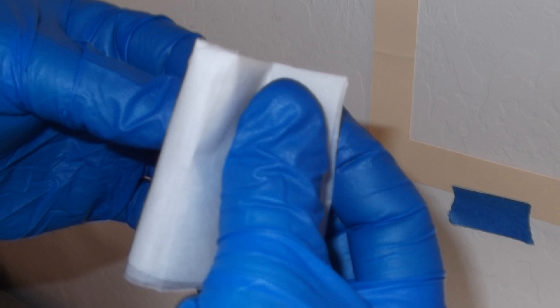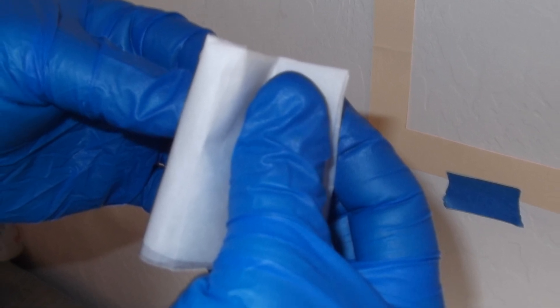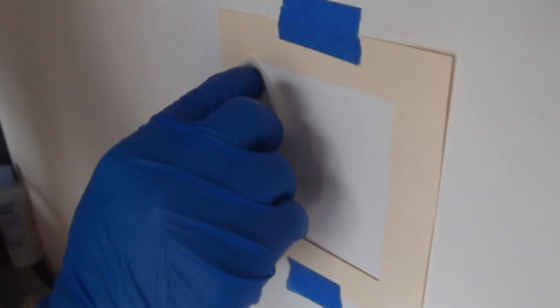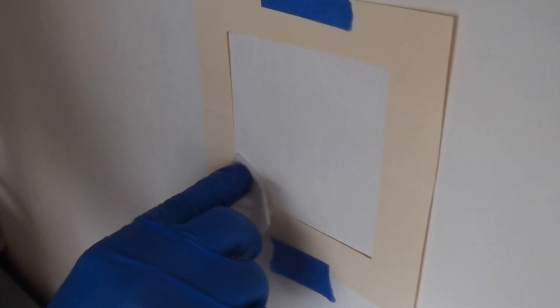Then, without allowing the wipe to touch any other surface, reverse the last fold so that the exposed side is now facing inward. Using the fresh surface of the wipe, again wipe or blot the same area at a 90-degree angle to the previous wipe pattern.